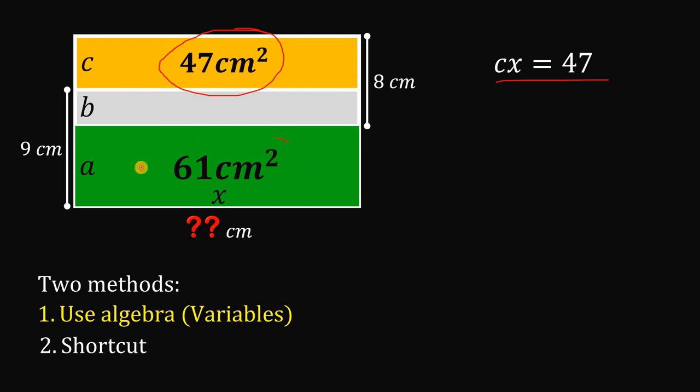Now, how about this area, 61 square centimeters. To get 61 square centimeters, we can multiply this x and this variable, a. So, we have ax equals 61. Now, let's set aside these two results.